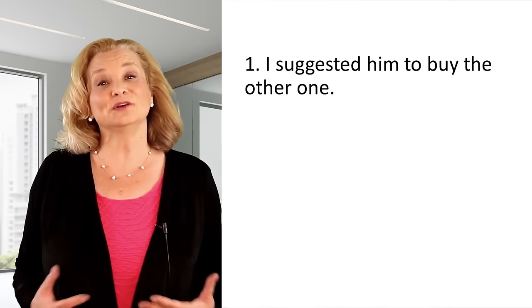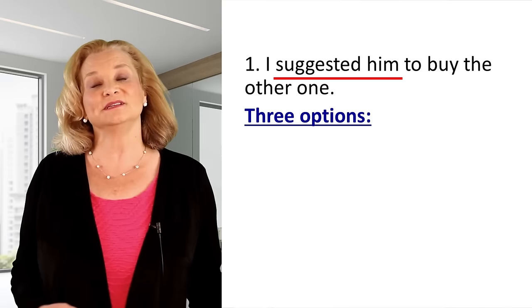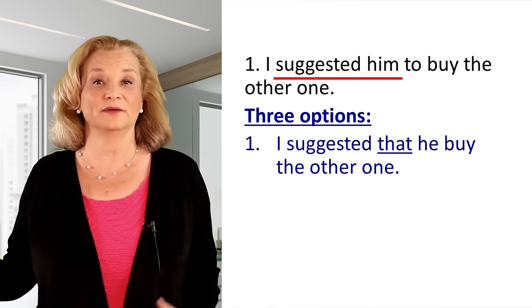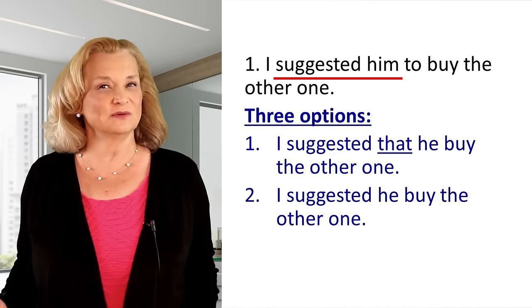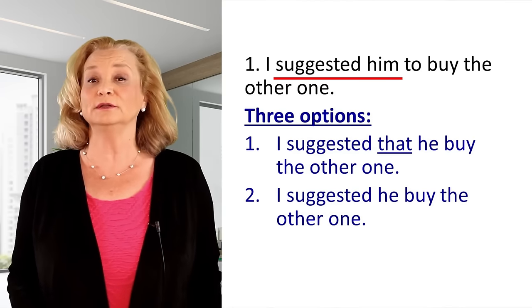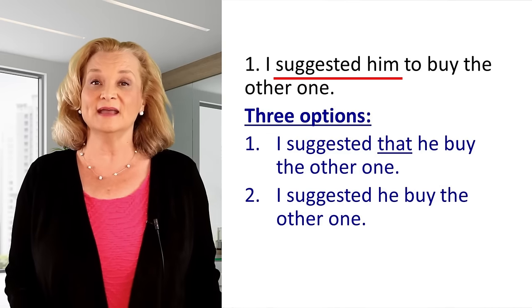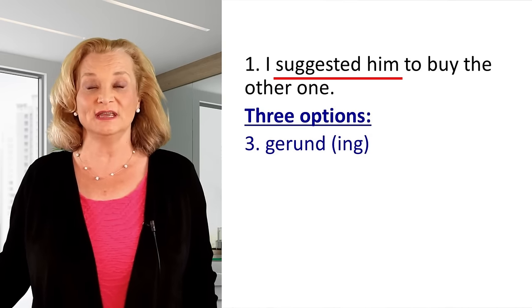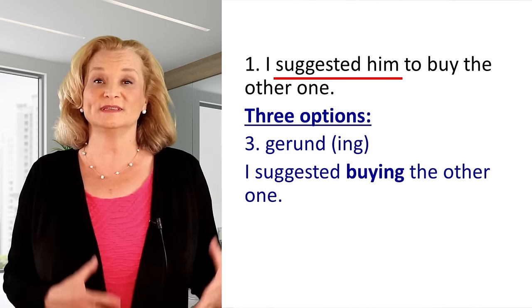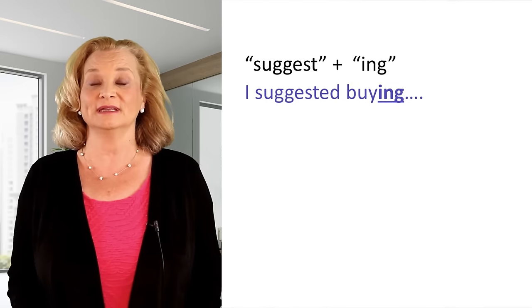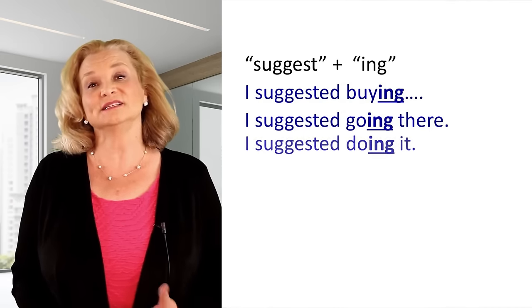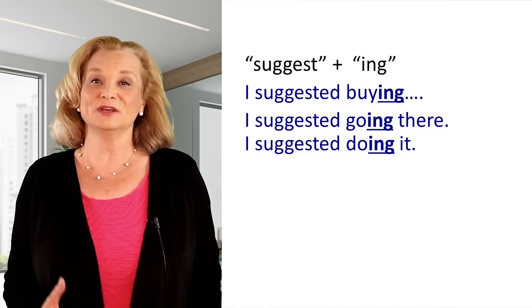So now I will give you the correct answers and I will teach you the grammar rules. Let's look at the first sentence: "I suggested him to buy the other one." It's incorrect to say "I suggested him." You can say "I suggested that he buy the other one" — the word "that" is optional — or "I suggested he buy the other one." You can also use a gerund: "I suggested buying the other one." With "suggested," if we use a verb immediately afterwards, it needs to have an -ing ending. It needs to be a gerund: "I suggested buying," "I suggested going there," "I suggested doing it."